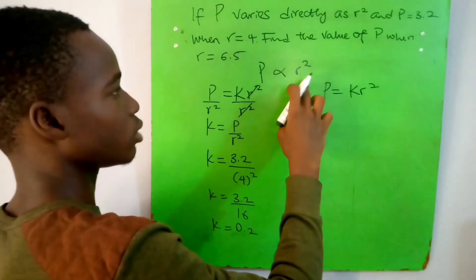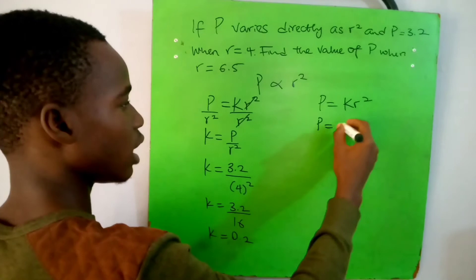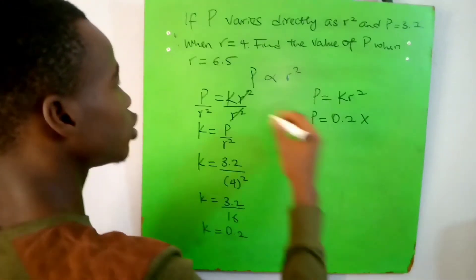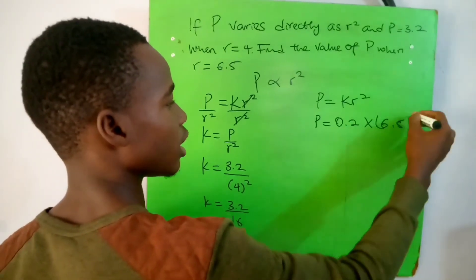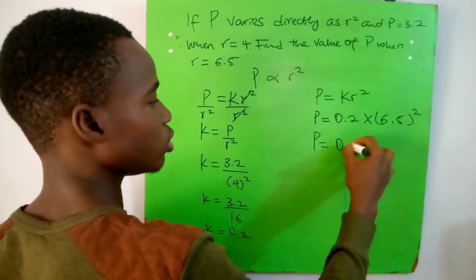We're looking for P. We have our k - our k is 0.2 from what we solved. So then, r squared is 6.5 squared. So P equals 0.2 times 6.5 squared. You can put it in the calculator. So this is 42.5.